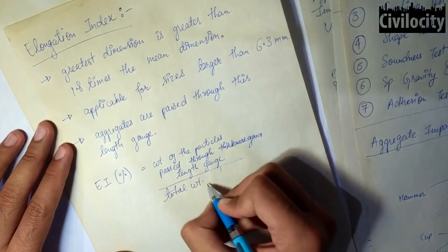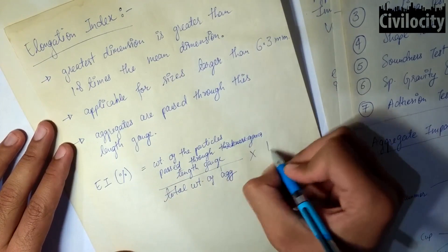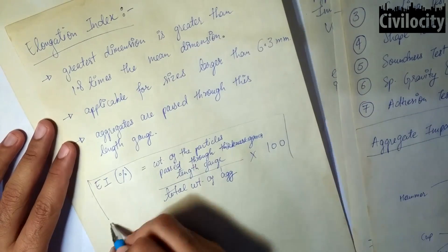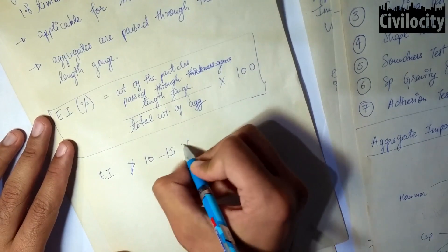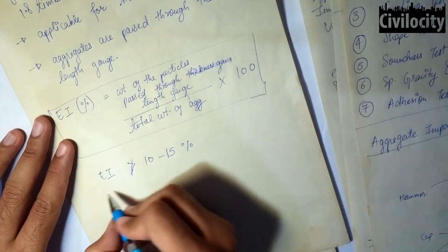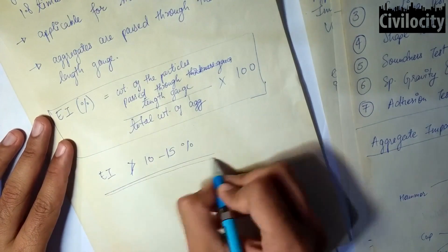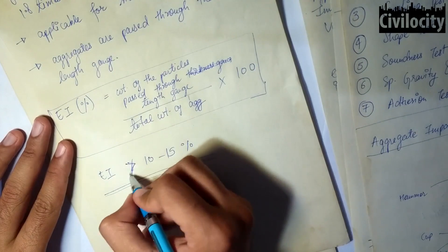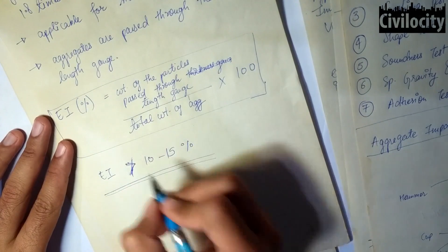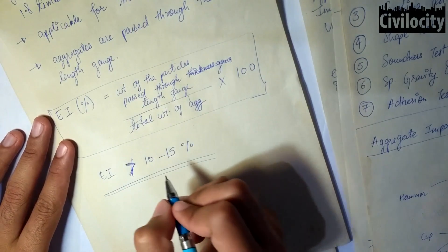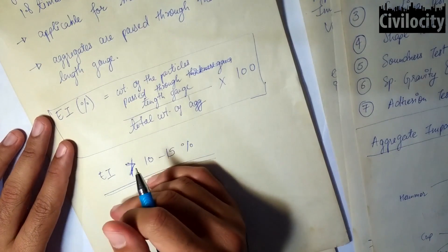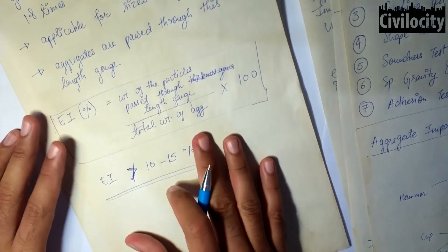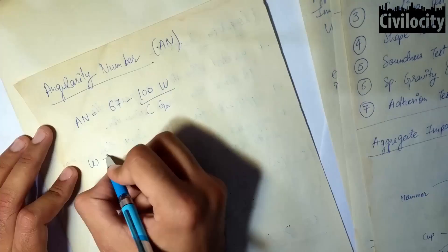Elongated and flaky aggregates are less workable, and they are highly likely to break under smaller loads. Flakiness index and elongation index values in excess of 15 percent are generally considered undesirable.